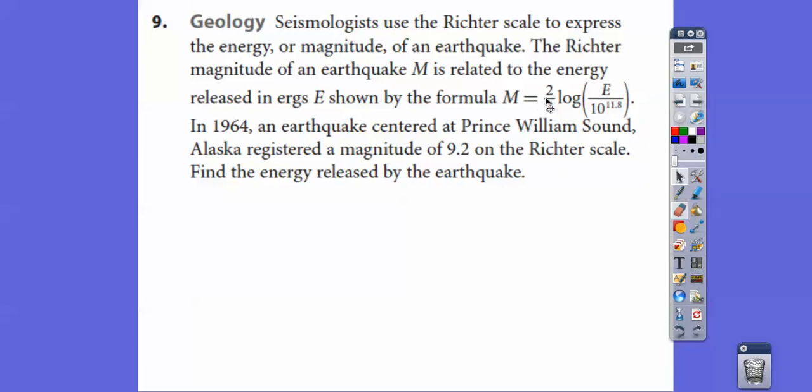The Richter magnitude of an earthquake M is related to the energy released in ergs E, shown by this formula: M equals two-thirds log of E over 10 to the 11.8 power. This is base 10 because there's no base there. In 1964, an earthquake centered at Prince William Sound, Alaska, registered a magnitude of 9.2 on the Richter scale. That's a huge earthquake. Find the energy released. We're going to solve for this E, so let's plug in the magnitude of 9.2.